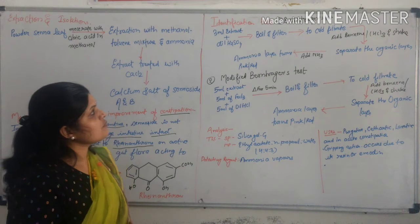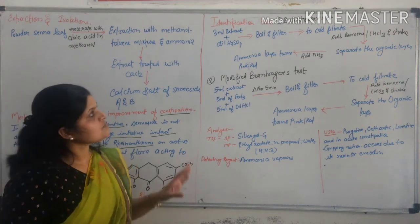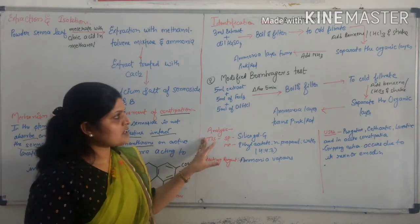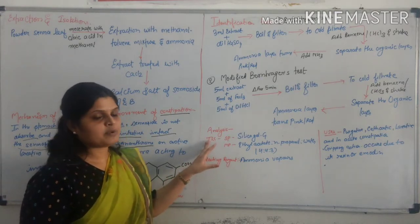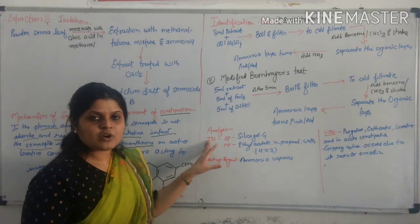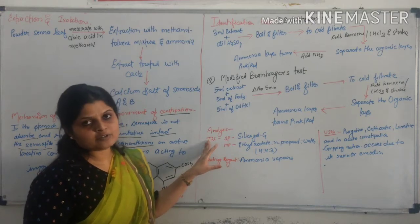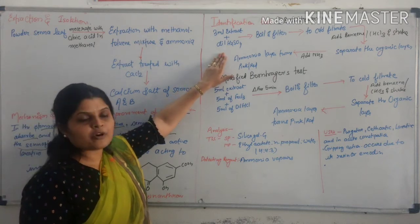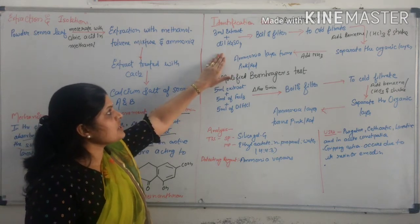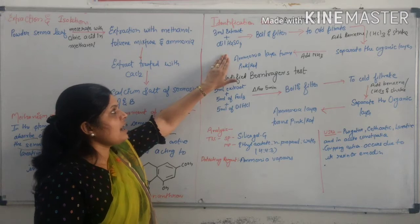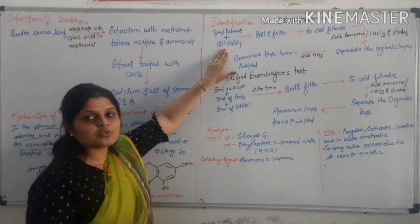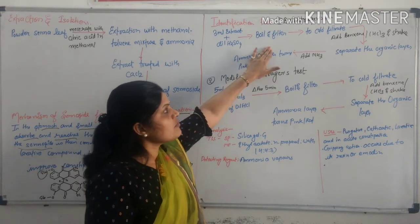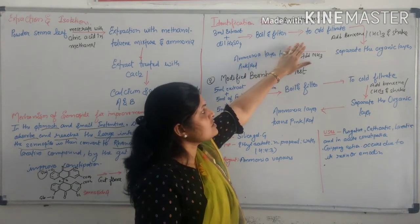Identification of sennosides: Borntrager's test and modified Borntrager's test. Both tests are performed for the detection of anthroquinone glycosides. In Borntrager's test, take aqueous extract and add ferrous sulfate solution. Then, boil and filter. Filtrate is obtained. This filtrate is cooled. Then, add equal volume of chloroform.